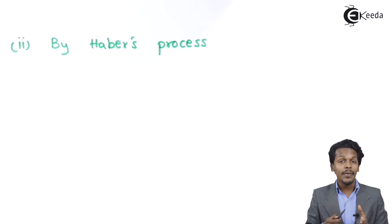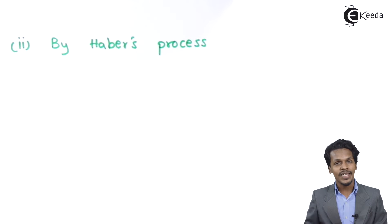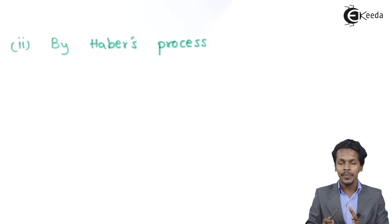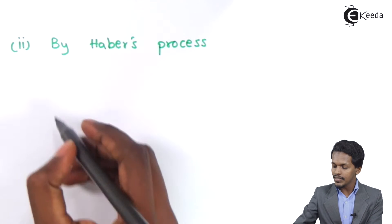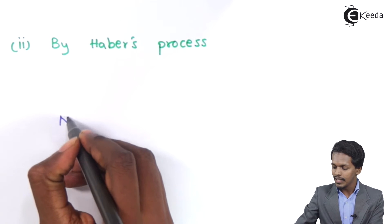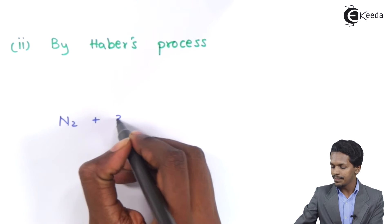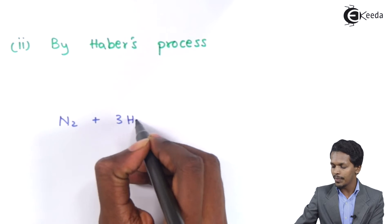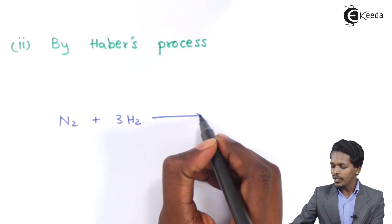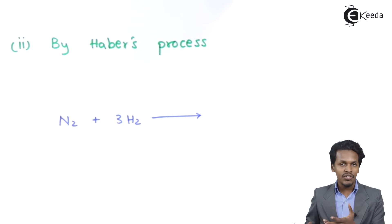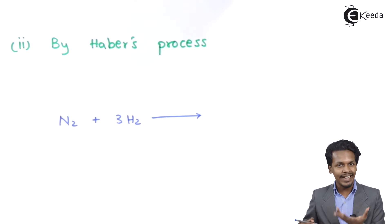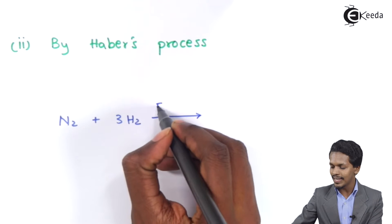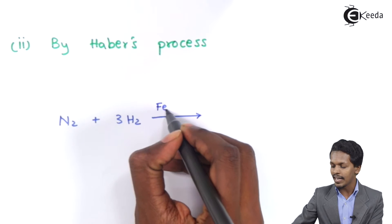Another method from which we can prepare ammonia is by Haber's process. We take nitrogen and hydrogen in a ratio of 1:3. At a particular temperature and by providing a certain catalyst — the catalyst here is Fe — along with certain promoters.